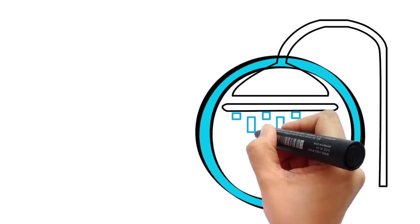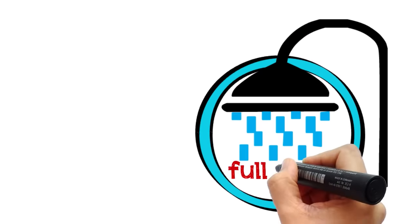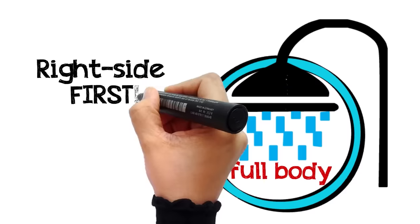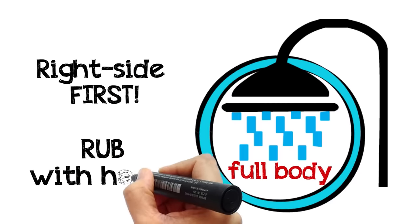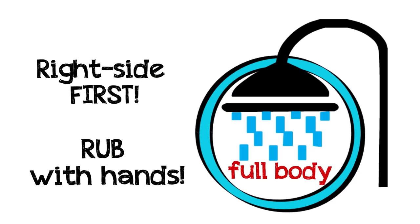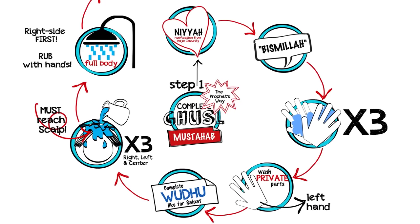And then pour water and wash the entire body, beginning with the right side, then the left, while rubbing it with your hands so that you are sure you haven't missed any part. So these are the etiquettes of the complete Gosil.